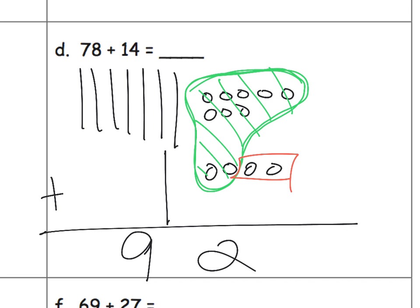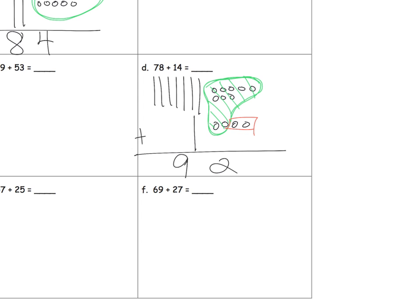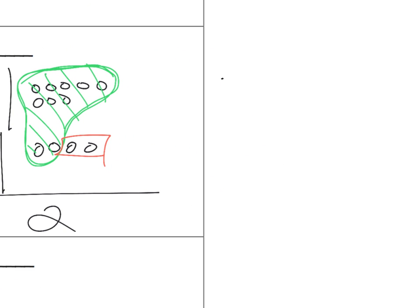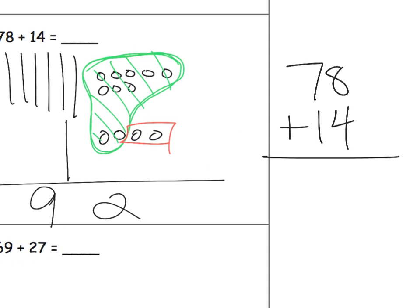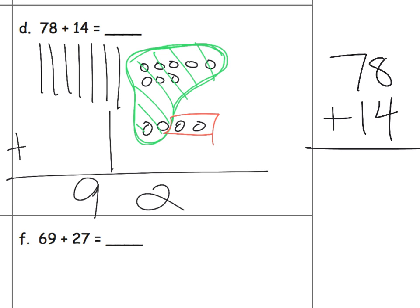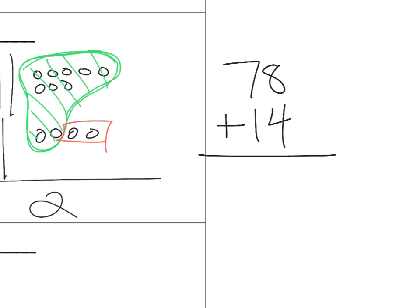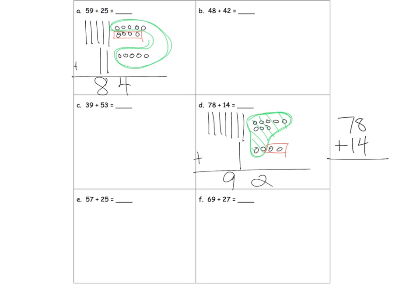So parents and teachers at this point we're not really dealing with efficiency because it'd be a lot more efficient just to stack up our numbers 78 plus 14 and add them, we get that, but the idea is we want students to understand the number sense that's going on when they eventually move to this standard algorithm and they will indeed get there but at this point we want to develop that number sense.